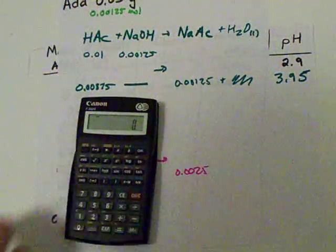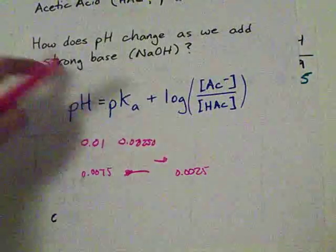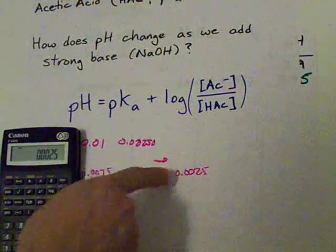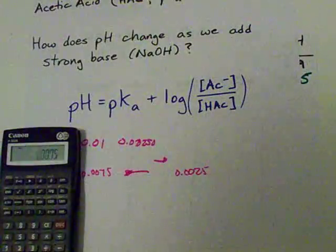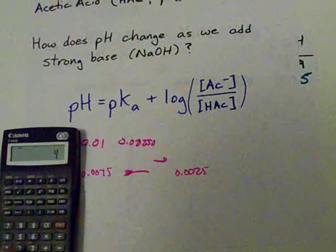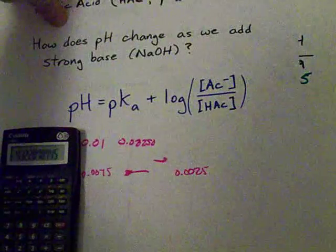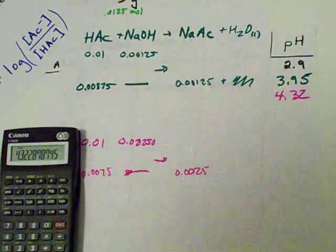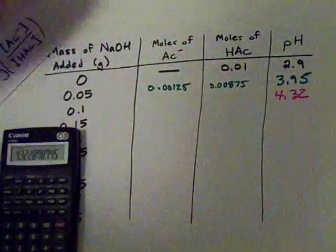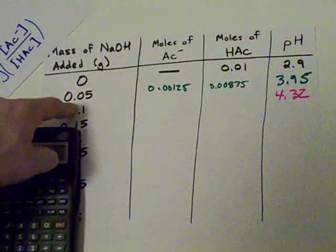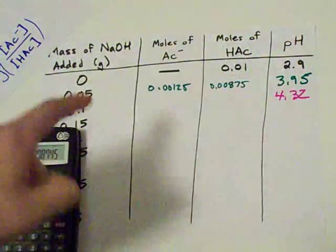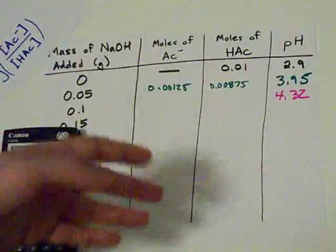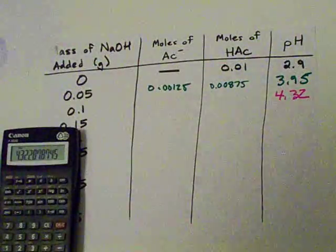So let's use the Henderson-Hasselbalch equation. Base divided by acid, take the log, and add the pKa. My pH after we add that much ends up being 4.32. Wait, wait, wait, wait, wait. Hold on. Wait, what? We added 0.05 grams of NaOH, and the pH went up by 1. Does that make any sense? The answer is yes. That's what makes it a buffer.